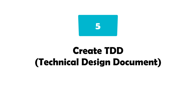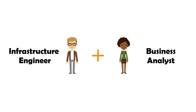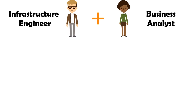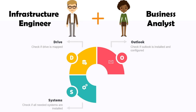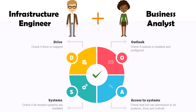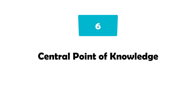The fifth task for the business analyst is to create the TDD, Technical Design Document. The business analyst does this together with the infrastructure engineer. The TDD contains the technical requirements of the process such as drive, Outlook, systems, and access to the systems. The infrastructure engineer goes through this document to implement the individual requirements and checks whether everything has been implemented correctly — for example, whether the drive is mapped, whether Outlook is installed and configured with the correct mailbox, which systems are necessary and installed on the machine, and whether the bot has access to the drive, Outlook, and all necessary systems.